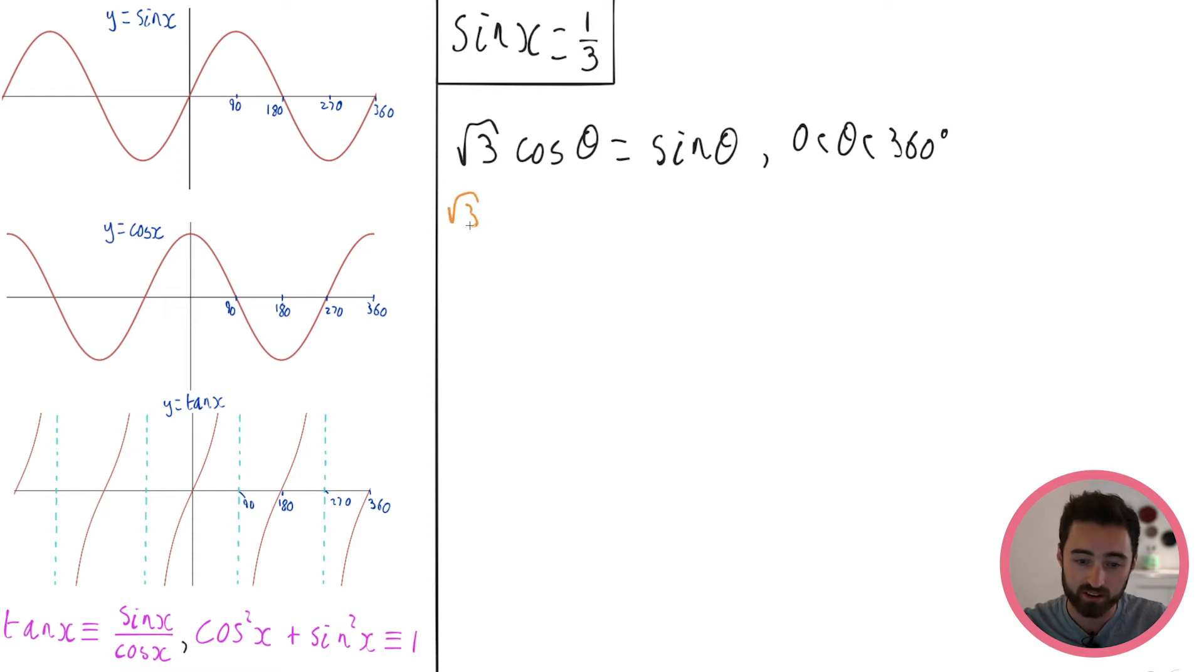So what if I was to divide both sides of the equation by cos here? I would get root 3 equals sine theta over cos theta. And then I say, wait a minute, sine over cos is just tan. So this is actually the same as the equation tan theta equals root 3. This is of the nice form, isn't it? This is of the form trig function equals number. So let's go ahead and actually solve this thing.